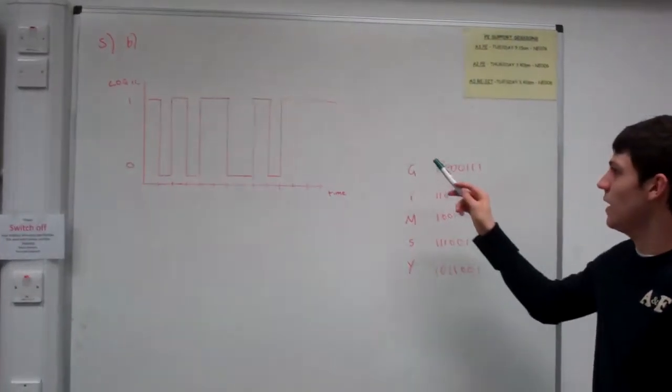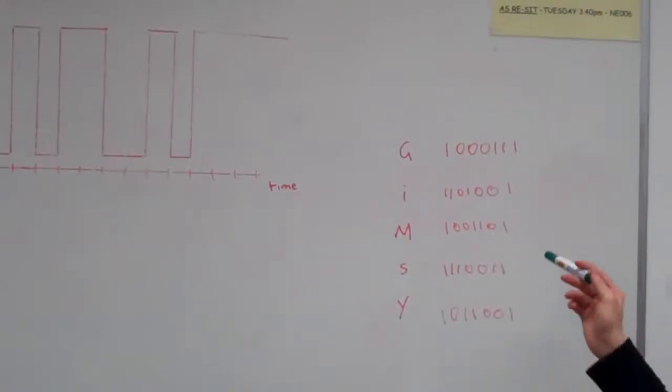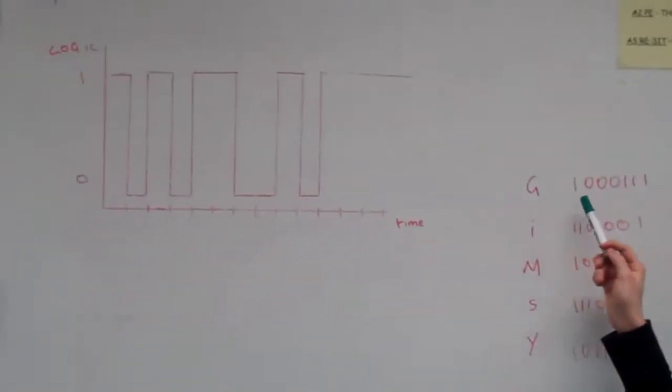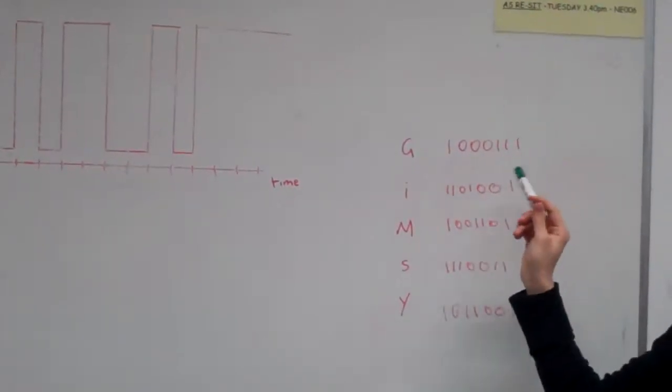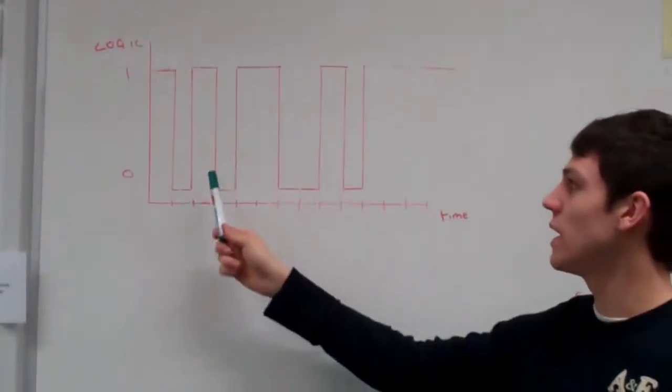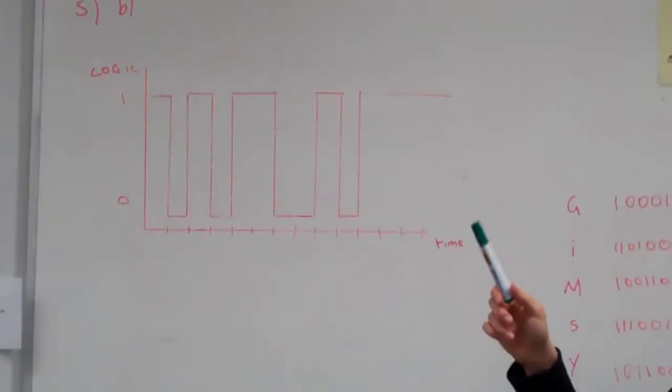This signal here is one of these signals given in a table above. Each of these is seven bits of data. So we know in here we've got a start bit, seven bits of data, a parity bit, then a stop bit.